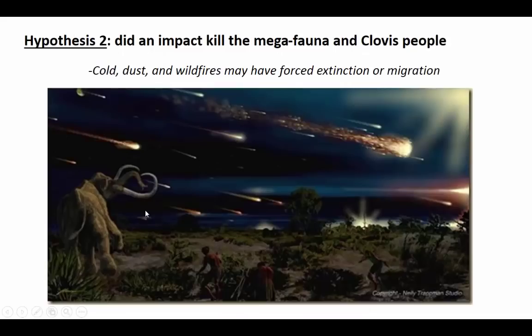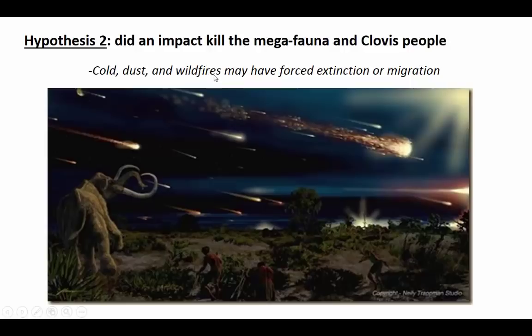However, another group of scientists has a competing hypothesis. Their idea is that the temperature drop, the Clovis extinction, and the megafauna disappearance could all be explained by an impact. What if a meteorite or a comet hit Earth and created a lot of dust, which shrouded the Earth in a reflective layer and caused a sudden drop in temperature? Perhaps that meteorite also set off wildfires which burned across the continents, creating ash, killing animals, and forcing extinction or migration of peoples.